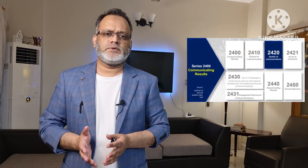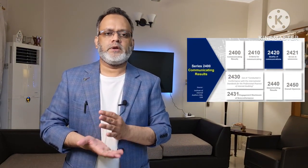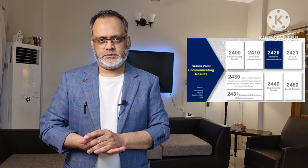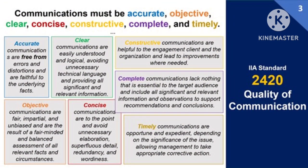The third standard of the series 2400 is 2420 quality of communication. The basic requirement of standard 2420 is that communications must be accurate, objective, clear, concise, constructive, complete and timely. Let's understand the definitions of all these terms as per the standard. Accurate means communications are free from errors and distortions and are faithful to the underlying facts. Objective means communications are fair, impartial and unbiased and are the result of a fair-minded and balanced assessment of all relevant facts and circumstances.